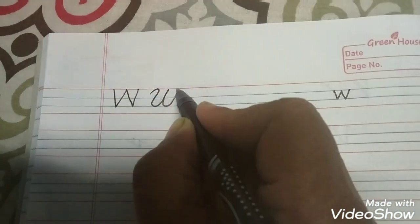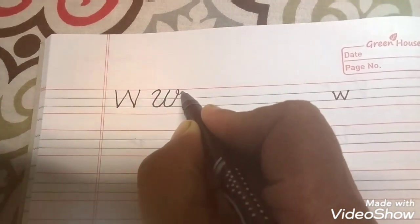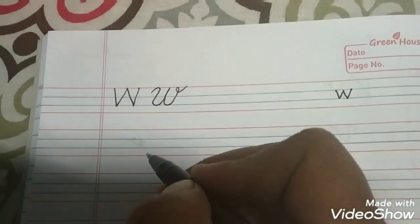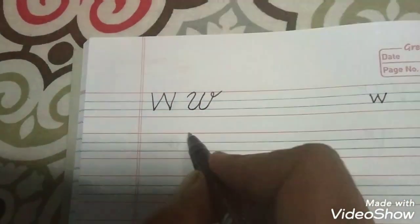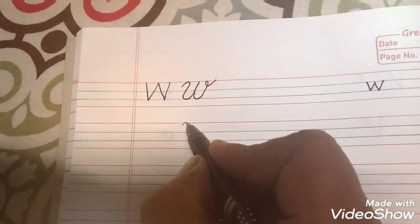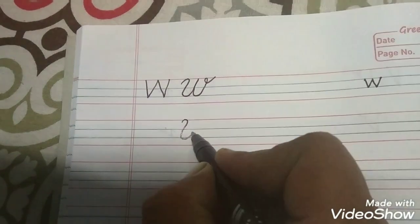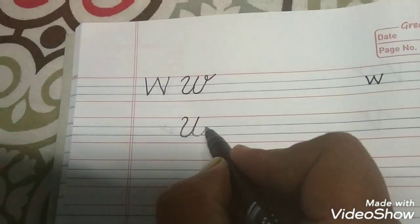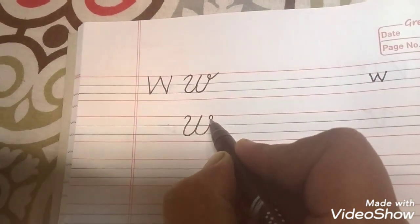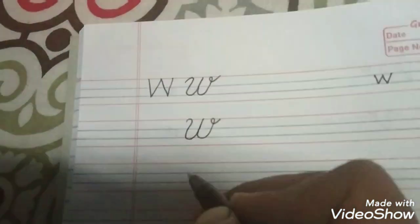W hum bolte hain. It's exactly W, thik hai. Toh U humne do U banane hain, okay? We make two U's like this and it's a loop. So how do you write W? You write a U like this, bring it down, and then take it up again and give a loop. This is W.